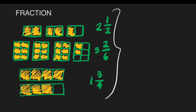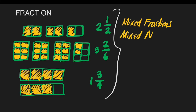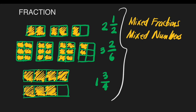These fractions are examples of mixed fractions or mixed numbers. Why are two and one-half, three and two-sixths, and one and three-fourths examples of mixed fractions? Because mixed fractions are a combination of a whole number and a fraction. If we look at our examples, all of them have a combination of a whole number and a fraction.